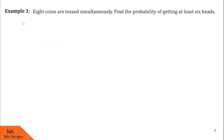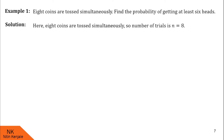In this first example, we are given that 8 coins are tossed simultaneously, and we are asked to find the probability of getting at least 6 heads. Let us see the solution. Here, 8 coins are tossed simultaneously, so the number of trials n is 8.